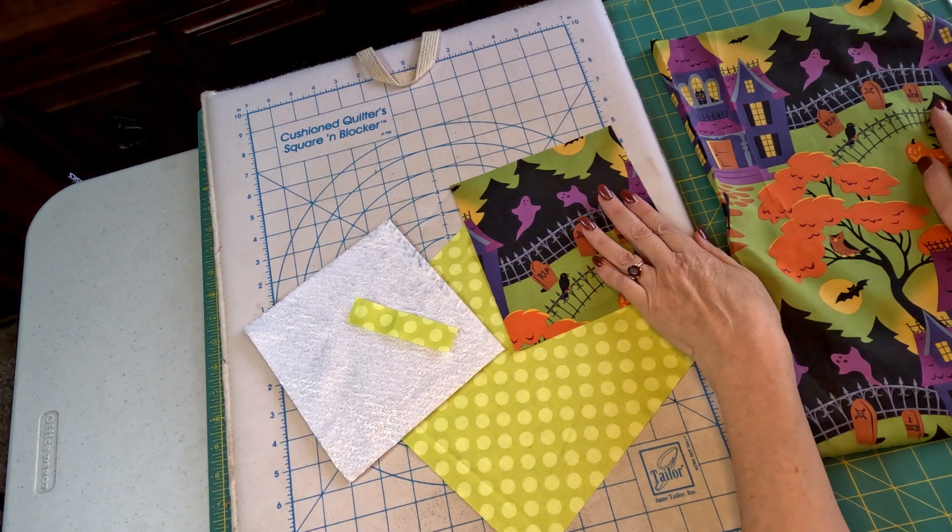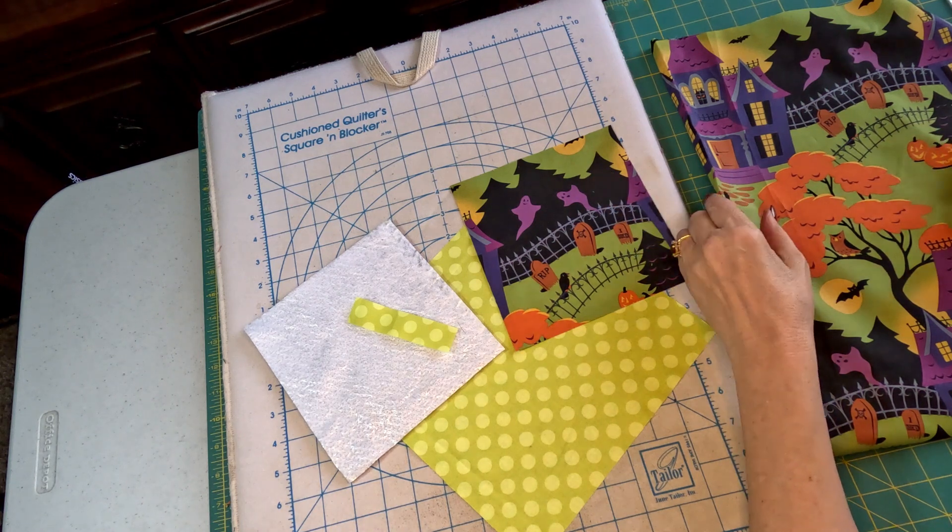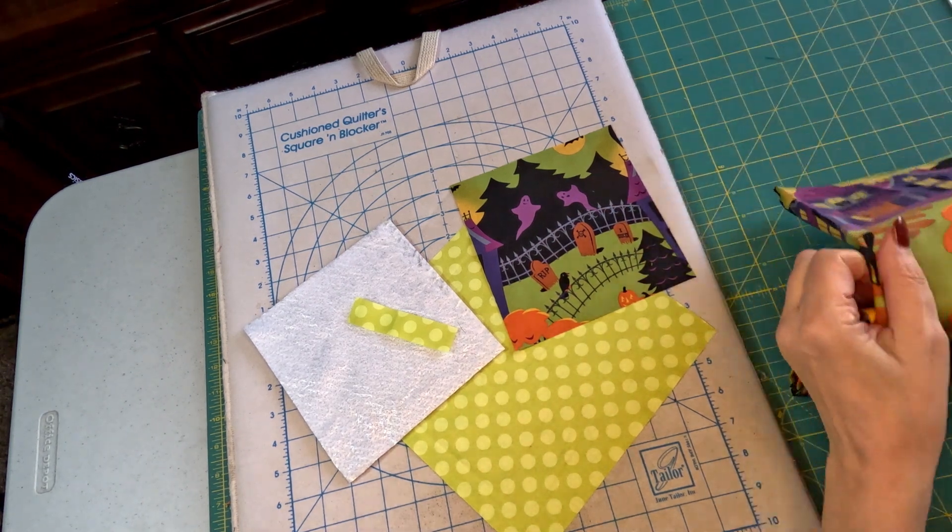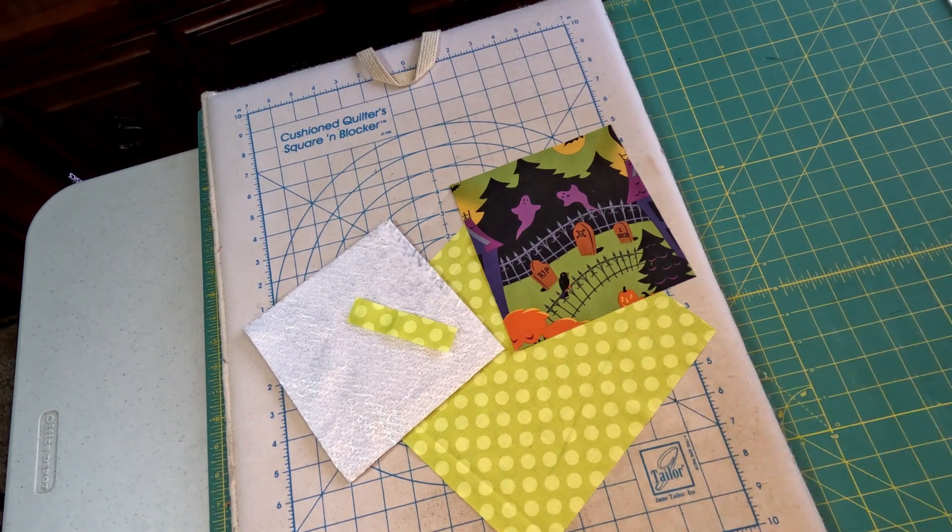We want to cut, I like my potholders to be between 7 and 8 inches in size. So, I cut this 7 inches square.